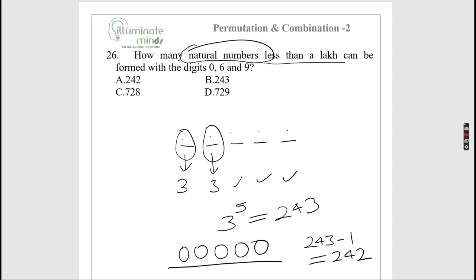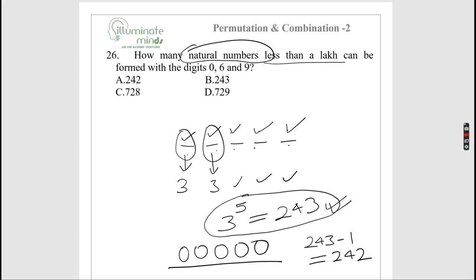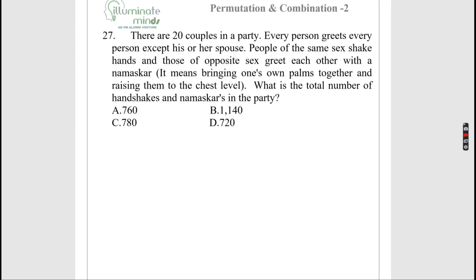How many natural numbers less than 1 lakh can be formed using digits 0, 1, 6, 9? Up to 5 digits, each place can be filled with 3 choices (0, 6, or 9 — wait, digits are 0,1,6,9 so 4 digits but first place has 3 options excluding 0... actually each place has 3 choices giving 3⁵ = 243 total, minus 1 for all zeros = 242.